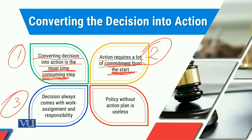The third important thing, when we are talking about converting decision into action, is that a decision always comes with work assignment and responsibility. Somebody needs to be accountable, somebody needs to be responsible, somebody needs to be there to make things happen and materialize them. So we have to be careful about accountability and responsibility — who it is — and in action plans to execute and implement these things, that will always be necessary.